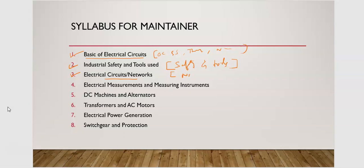Electrical measurements and measuring instruments is very, very important. This can give you four to five easy marks. The questions that appear are straight-forward, direct questions — one-word type answers. So this is a very easy area to score in.